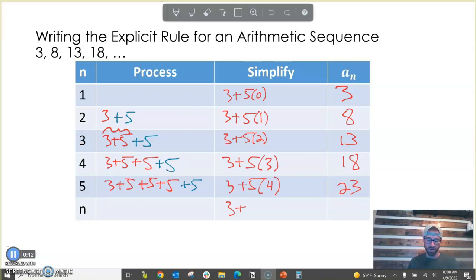And hopefully, you recognize that the number here is just one less than the term we're looking for. So, if we're looking for the nth term, we do 5 times n minus 1. And that's going to be our explicit rule. If I wanted to do a sub n and use that subscript notation, we do 3 plus 5 to the n minus 1.